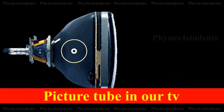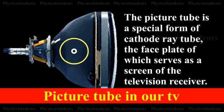Monochrome Picture Tube. Describe a monochrome picture tube. The picture tube is a special form of cathode ray tube. The face plate of which serves as the screen of the television receiver.